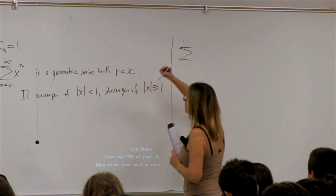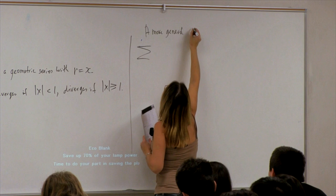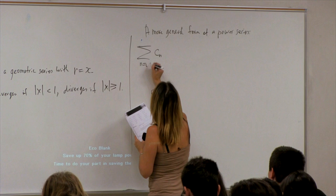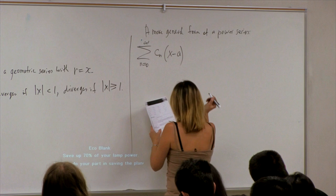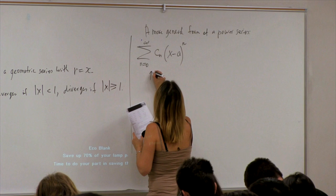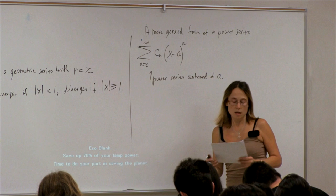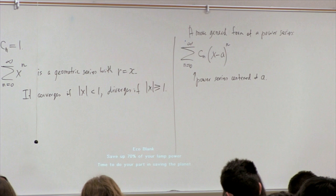Here is a more general form of a power series. We again have coefficients cn, but instead of x to the n we have x minus a to the power of n. It's called the power series centered at a, where a is a constant. The main question we are going to study today is the convergence of these power series.